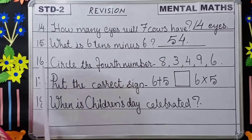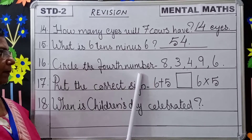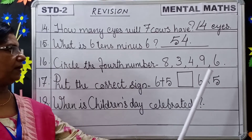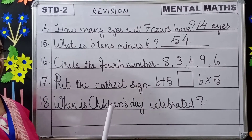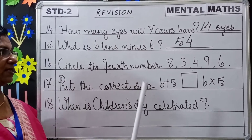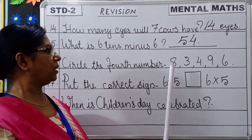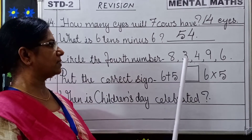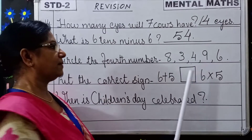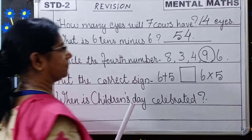Question number 16: Circle the fourth number. Numbers are given and you have to count using ordinal numbers — first, second, third, fourth. So you count first, second, third, and fourth. Which comes as the fourth number? Nine. So you circle it.